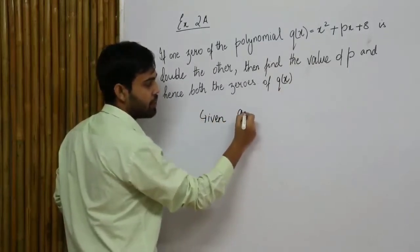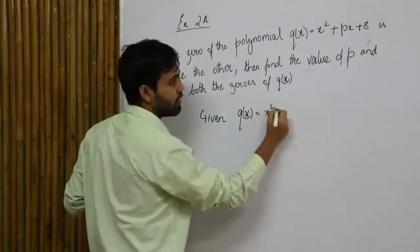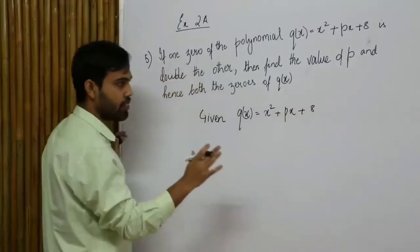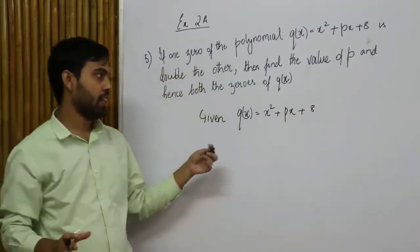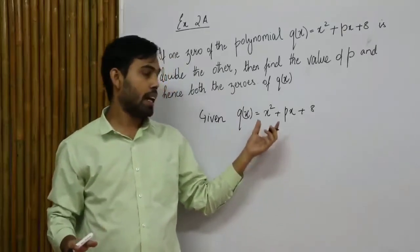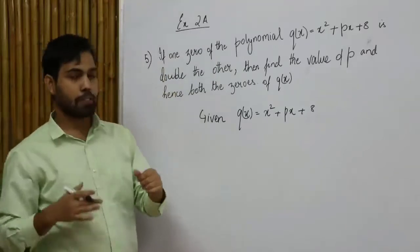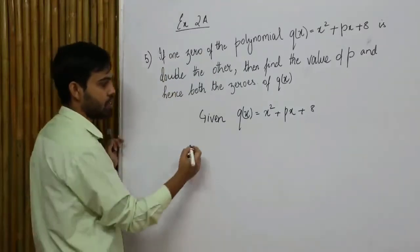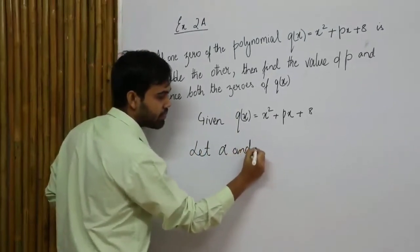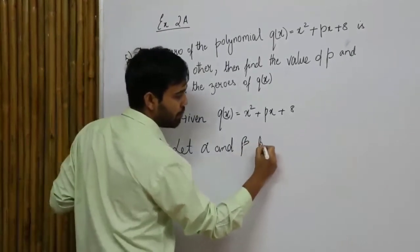They have given me a polynomial q(x), which is equal to x squared plus px plus 8. This is a quadratic polynomial with degree 2, so I'll have two zeros. Let alpha and beta be the two zeros.